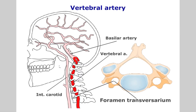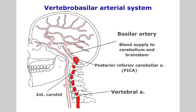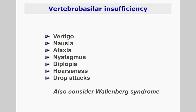In some instances, you may need to evaluate the integrity of the vascular supply to the brainstem. The vertebral arteries ascend through the transverse processes of C6 to C1, forming the vertebrobasilar arterial system, which supplies the brainstem and cerebellum. Clinical features suggestive of vertebrobasilar insufficiency include vertigo, nausea, ataxia, nystagmus, diplopia, and hoarseness. With vertebrobasilar disease, also consider the clinical presentation of Wallenberg syndrome.